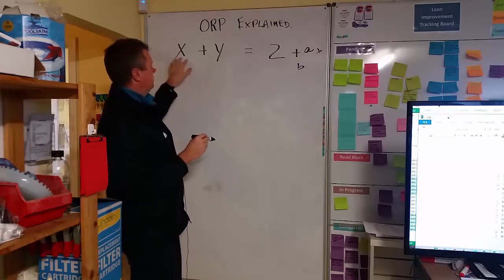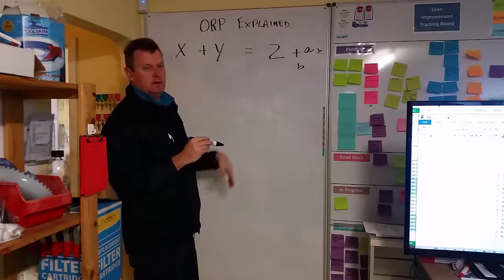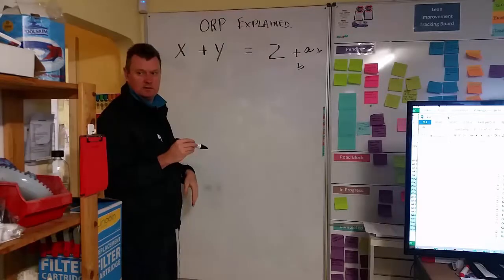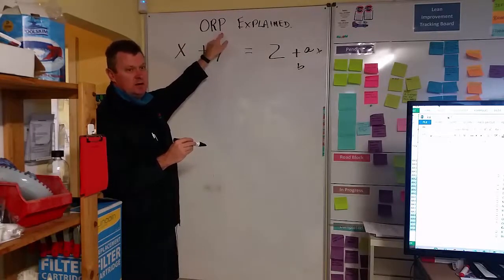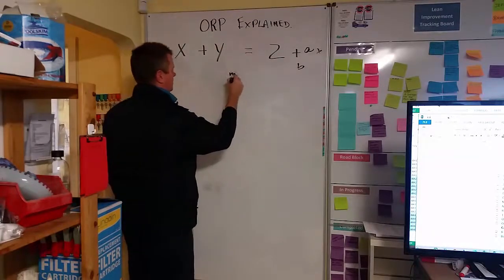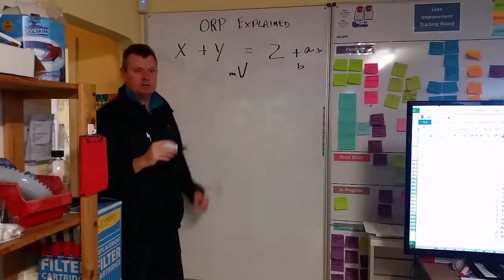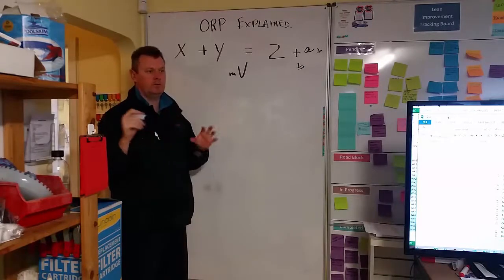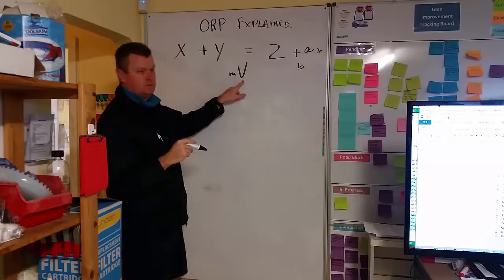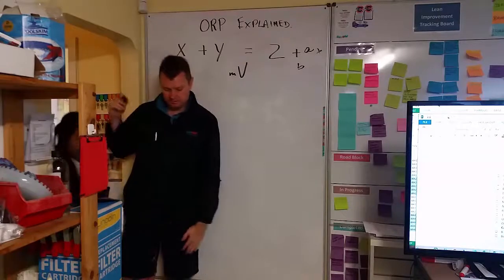Chlorine operates chlorine plus bugs or whatever equals blah, blah, blah. Okay, so that's the ORP is the potential, so that's like the killing power of the water. So that's measured in millivolts, which is where the reading on the front of the screen is 705. It's not 7.05, it's 705 millivolts.